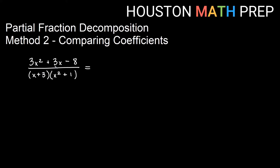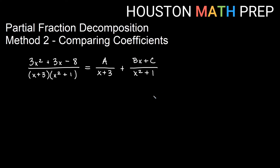Here I've set up (3x² + 3x - 8) over (x + 3)(x² + 1). Looking at our denominator, which is already factored, I know I'm going to have something over (x + 3) and something over (x² + 1). Since (x + 3) is a linear factor, we need only a constant A. Since (x² + 1) is a quadratic factor, I need all powers below x², meaning an x term and a constant — so Bx + C in the numerator.